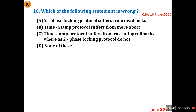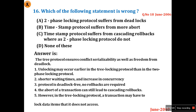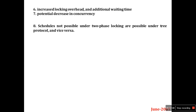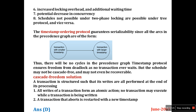Question 16: Which of the following statements is wrong? This was also asked in June 2006, question 18. Two-phase locking protocol suffers from deadlock; timestamp protocol suffers from cascade rollback, whereas two-phase locking does not. I explained this in detail in part 2 of June 2006 — what is two-phase locking, cascade rollback, etc. Option D is the right answer.